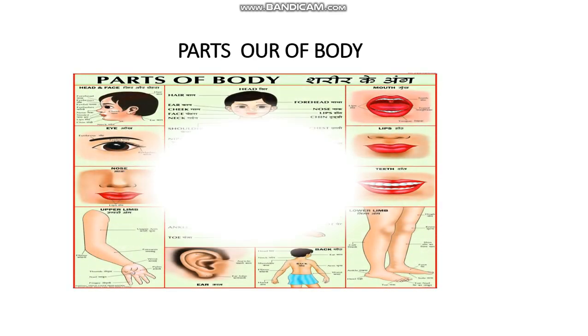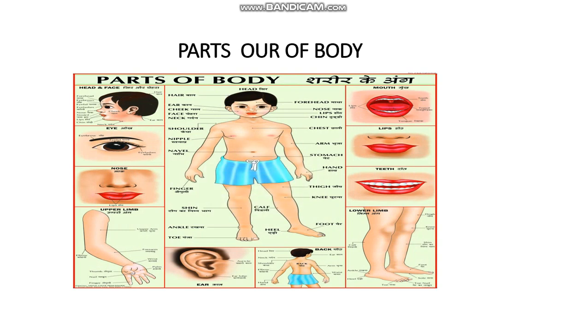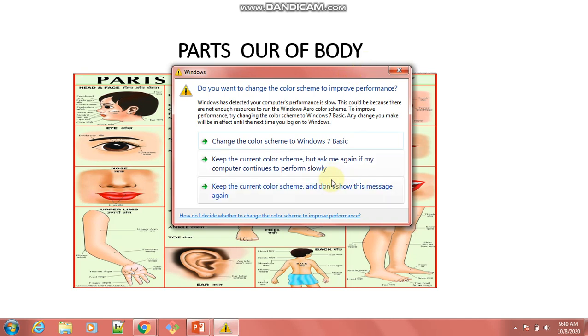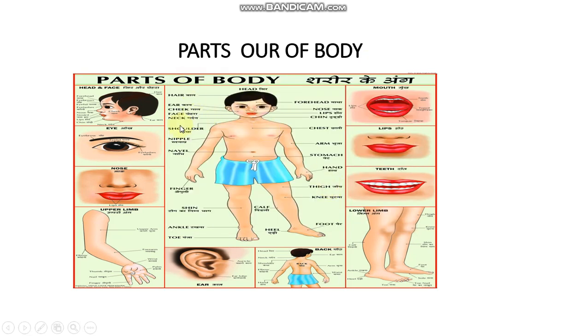Let me show you one picture. This is the parts of our body. These are our parts of our body. We have: head, hands, forehead, ear, neck, face, shoulder, hip, stomach, arms, chest, and legs. We have different parts.